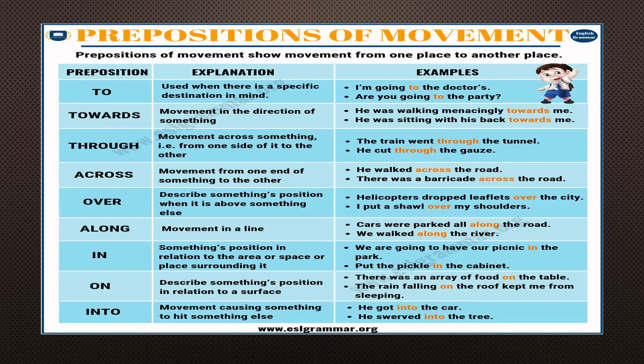To is used to show a specific destination: I am going to the doctor's. Towards is used to show movement when something is coming: He was walking menacingly towards me. Through shows movement across something — from one side to the other side: He cut through the gaze. Across is used to show movement from one end of something to the other end: He walked across the road.